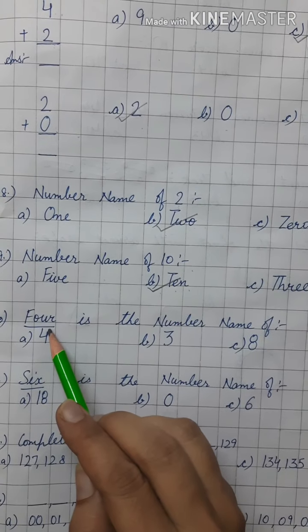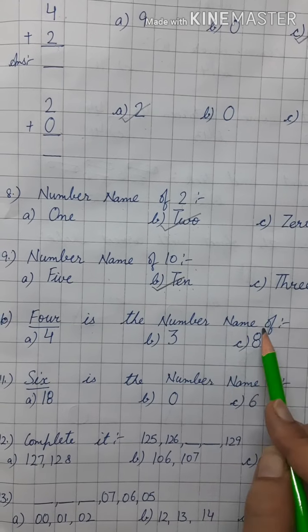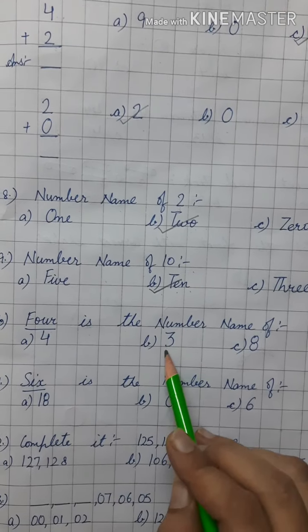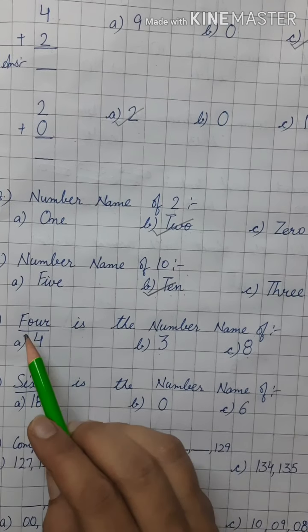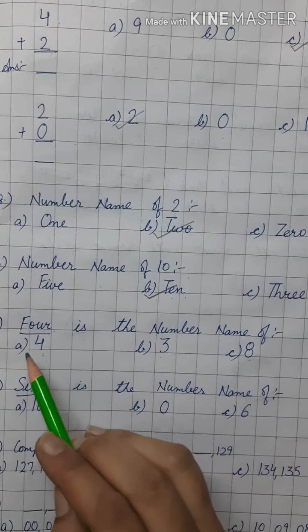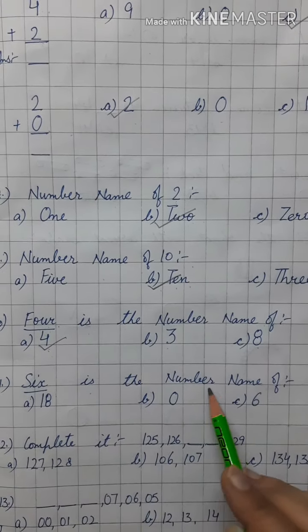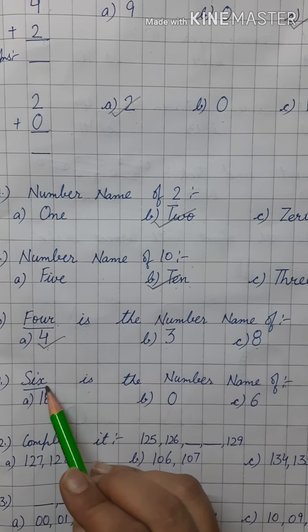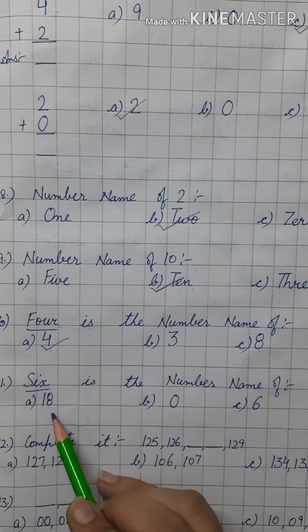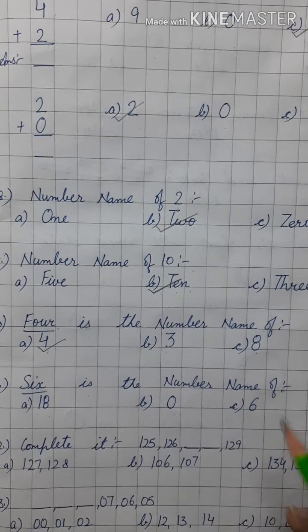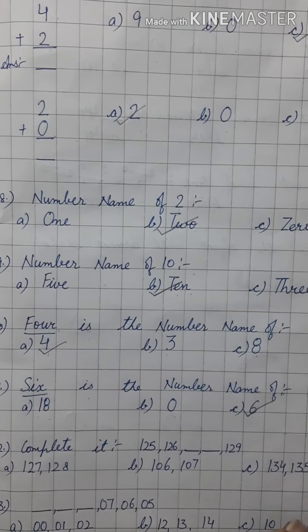Now, 4 is the number name of 4, 3 or 8? F, O, U, R, 4. So, we will tick the option B. 6 is the number name of S, I, X. 6 ke spelling. So, we will tick the option B.